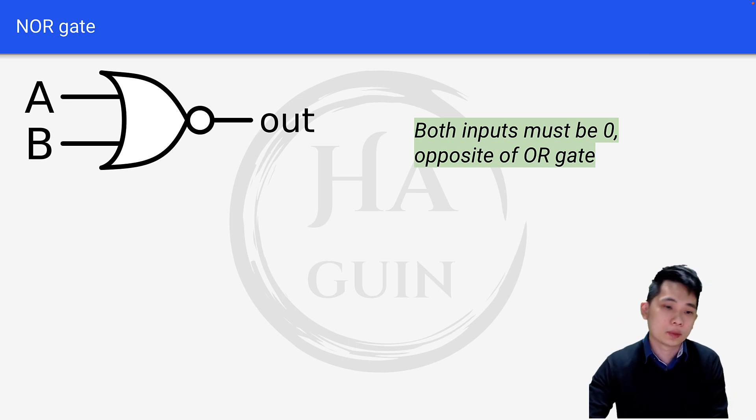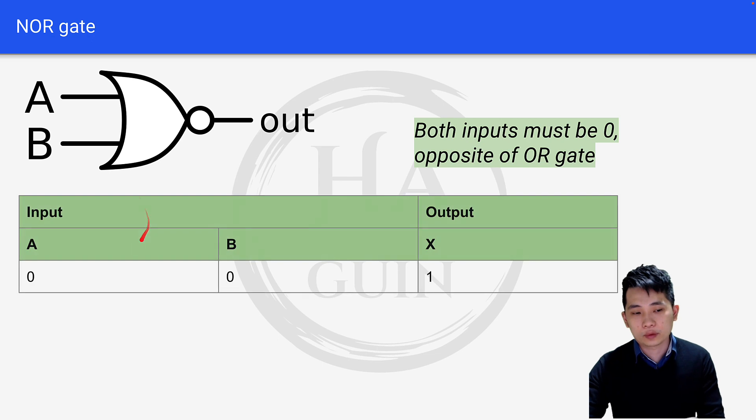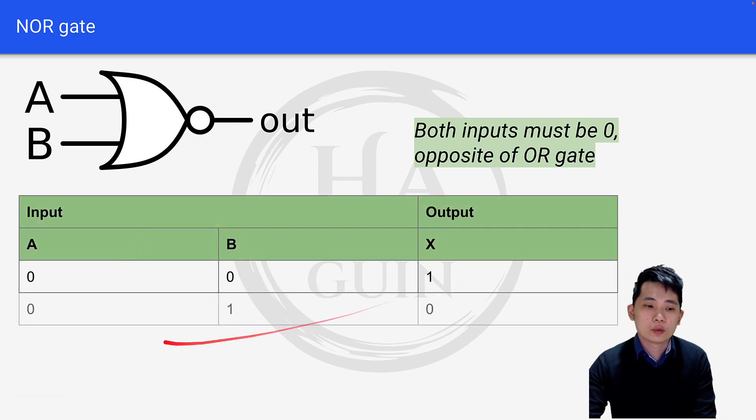Let's look at the NOR gate table. If we have 0, 0, we get 1. Then 0, 1, we get 0. Then 1, 0, we get 0.